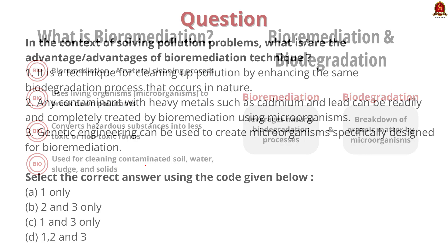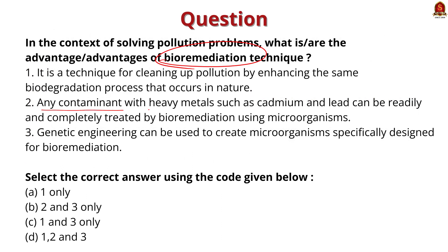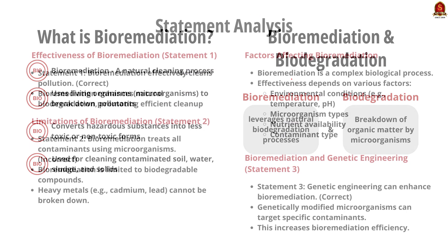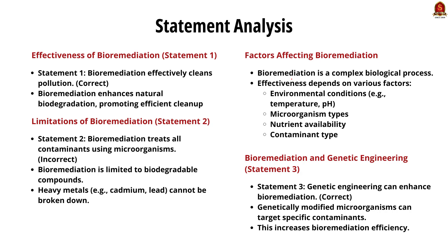Now look at the second statement: any contaminant with a heavy metal such as cadmium and lead can be readily and completely treated by bioremediation using microorganisms. This statement is incorrect. Not all contaminants are easily treated by bioremediation — it is limited only to biodegradable compounds. Being a biological process, it has many limiting factors like the type of environmental growth conditions, type of microorganisms used, type of nutrient requirements, and type of contaminants. So statement two is incorrect.